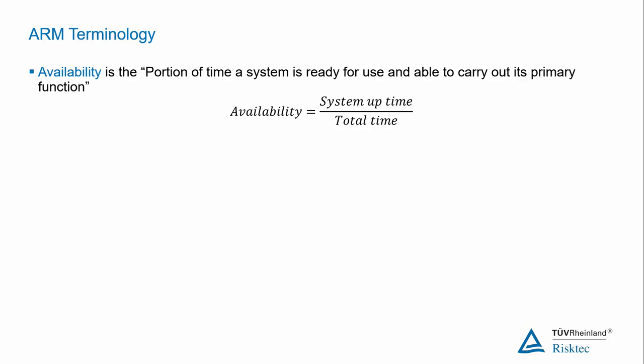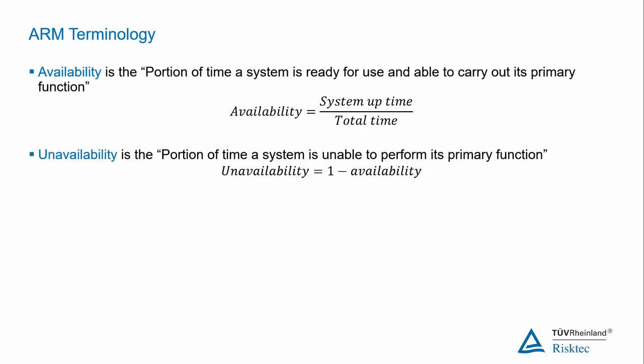The Availability of a system can be calculated by dividing the system uptime by the total time. The unavailability of a system — the portion of time that a system cannot fulfil its primary function — is the complement of the Availability. Given that a system can either be available or unavailable and both numbers are probabilities, the sum of the Availability and Unavailability must equal 1. Thus, unavailability can be calculated by subtracting the Availability from 1.